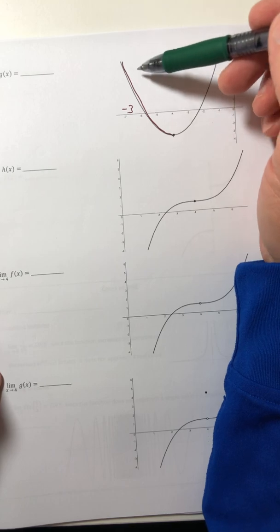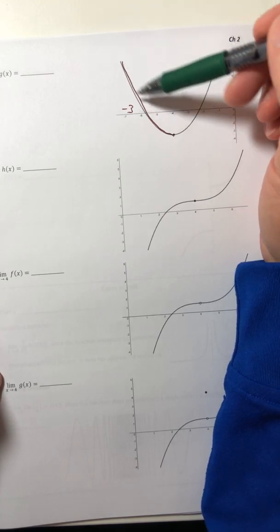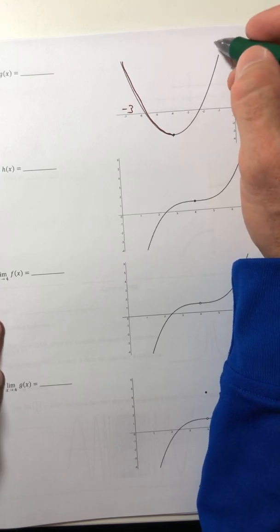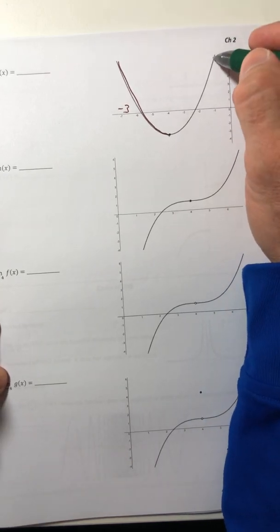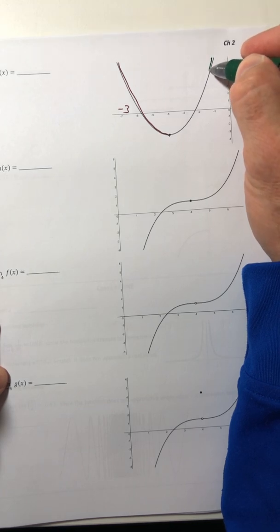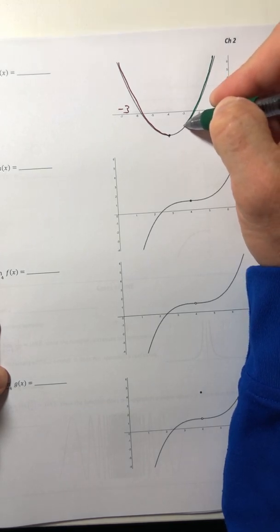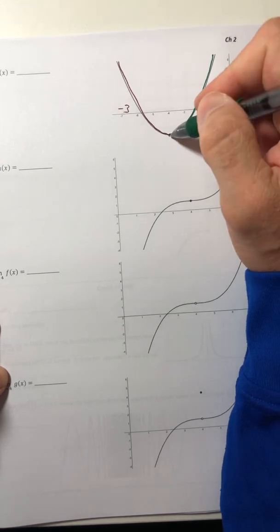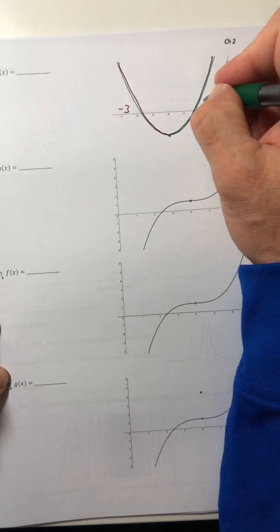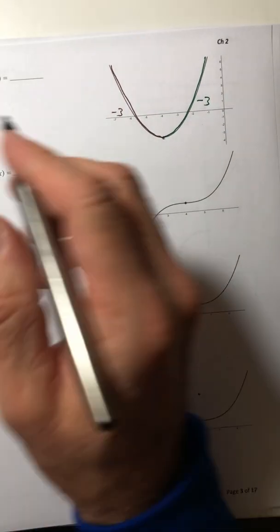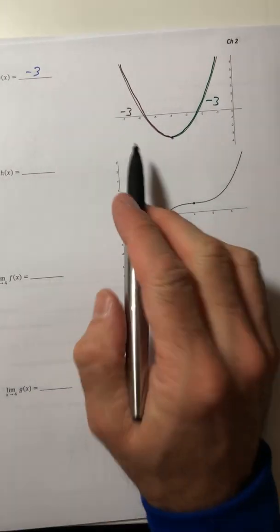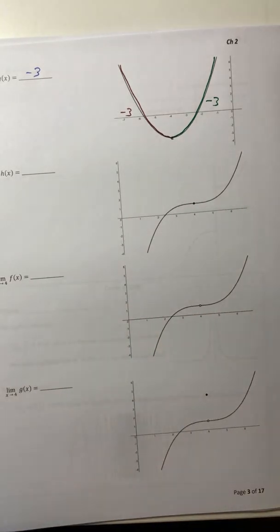And for those of you who are wondering, I wasn't trying to trace perfectly. I was just trying to get it so you can see the different colors. I guess a highlighter would have been a little better. Oh well. So let's trace in from the right. And as you get closer and closer to X equals negative four, it looks like you're going to run into Y equals negative three. So the limit is negative three. You approach the same number from both sides.